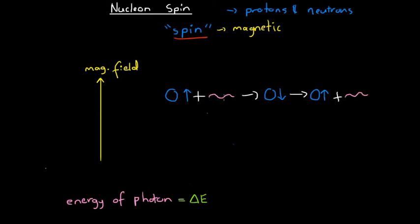It just so happens that the photons that tend to carry the right amount of energy for this process are radio wave photons. So, we're almost always dealing with radio waves when we're talking about nucleon spin and changes in energy. That's the process — that's nucleon spin and that's how we can analyze the energy of nucleon spin.